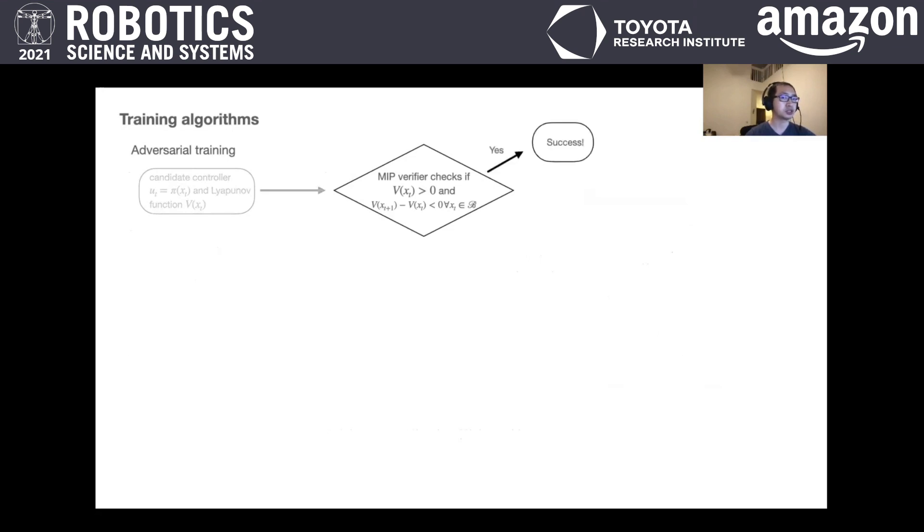Otherwise, we append the adversarial state to a training set and minimize the loss function over that training set. We get a new candidate controller and Lyapunov Function and loop back to the verifier.